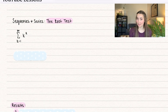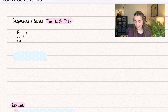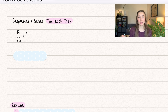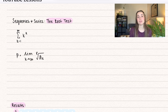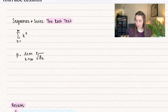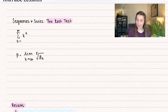Here is an example series that we might be working with. We have the summation k equals 1 to infinity of k to the power of k. Notice that we have a power of k, which is where the root test comes in. The root test uses a value p equal to the limit as k approaches infinity of the kth root of a sub k.